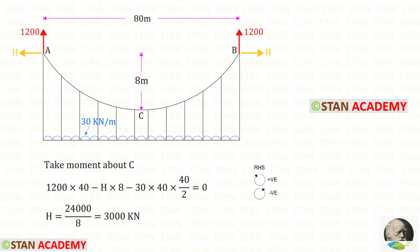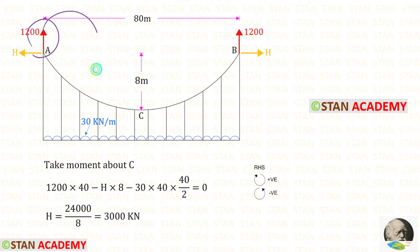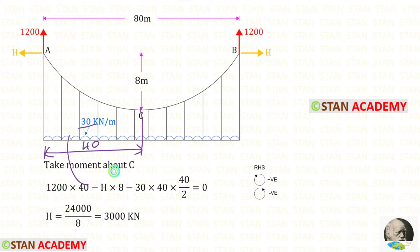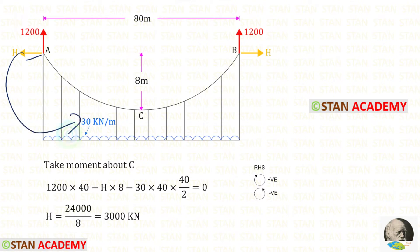Now let us find the horizontal thrust H. To find H, I am going to take moments about point C from point A, moving towards the right-hand side. Clockwise will be positive and anti-clockwise will be negative. VA is acting in the clockwise direction, so it is positive; the distance from C to A is 80/2 = 40, giving VA × 40. The UDL is acting anti-clockwise, so it is negative — for the UDL we multiply with the distance and half the distance. The horizontal thrust is also acting anti-clockwise and its perpendicular distance is 8. Finally, solving for H we get 3000 kilonewtons.